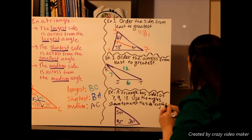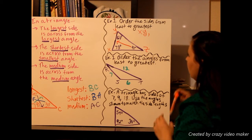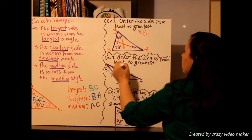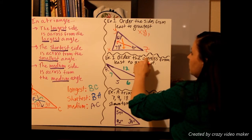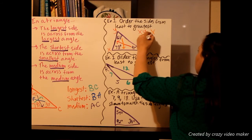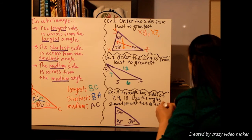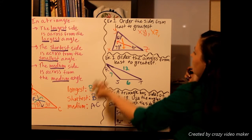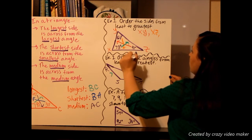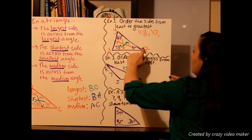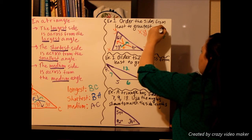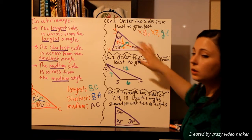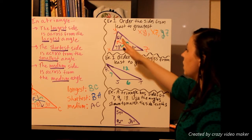Now we look for our medium angle, which is 66 degrees. We draw a line directly across from it, and it points at side XZ. So our medium side is XZ. Then we look at our largest angle, which is 73 degrees. We go directly across, and it goes between Y and Z. So our longest side is YZ. Drawing these arrows is really going to help you keep track of which side you're talking about.